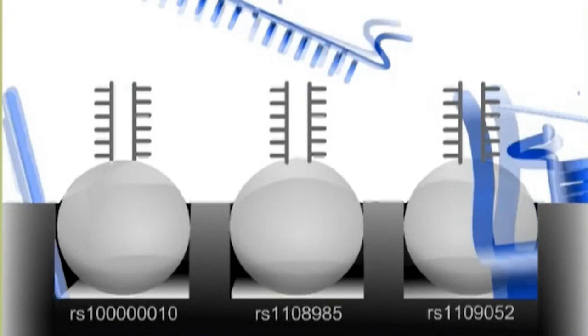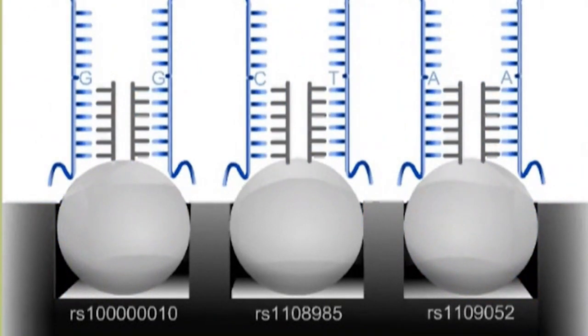During the hybridization step, the DNA sample is applied to a bead chip where it anneals to the locus-specific probes. The probes are complementary to the bases adjacent to, but not including, the SNP base. The specificity of this hybridization is ensured by the length of the probes, the high stringency buffer conditions, and elevated temperatures.